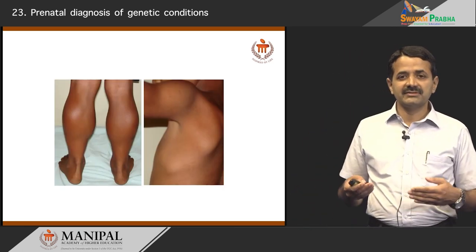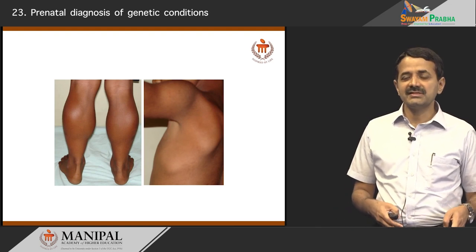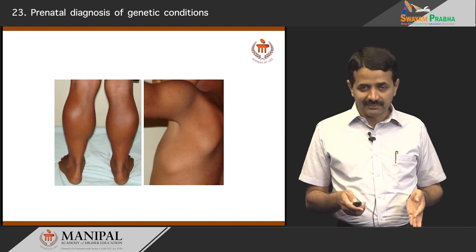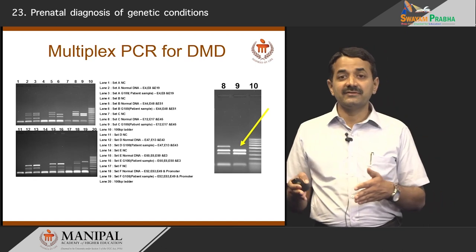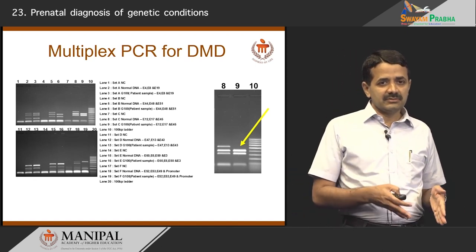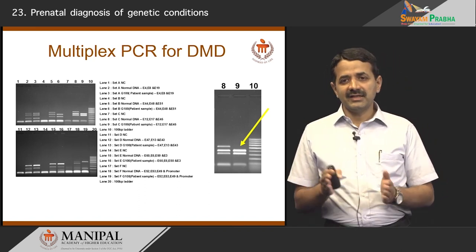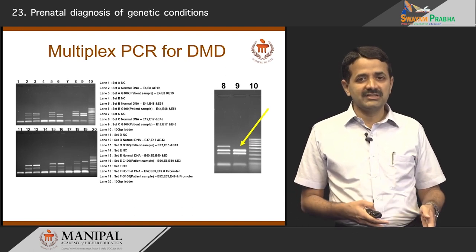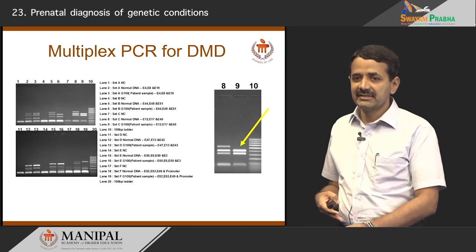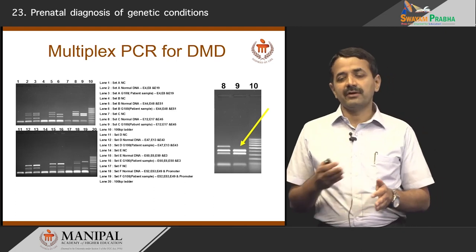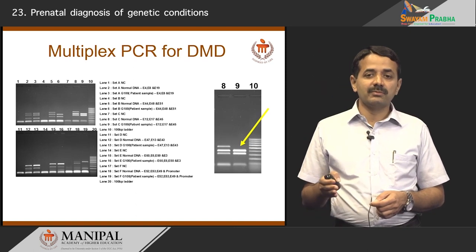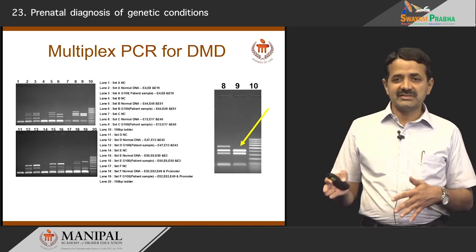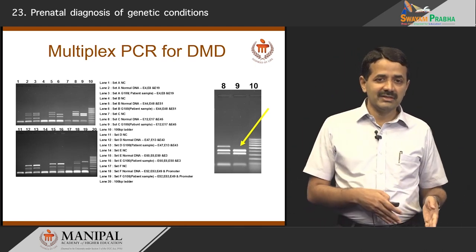One example is Duchenne muscular dystrophy, where children have progressive muscle weakness and muscle hypertrophy, and usually succumb in their second decade. It can be diagnosed by multiplex PCR. You can see bands for different exons of the DMD gene. In lane 9 on the right side, one band is missing — that particular exon is deleted, confirming DMD. We can also use MLPA (multiplex ligation-dependent probe amplification). This multiplex PCR runs several PCRs in one tube to detect whether the unborn baby has Duchenne muscular dystrophy.